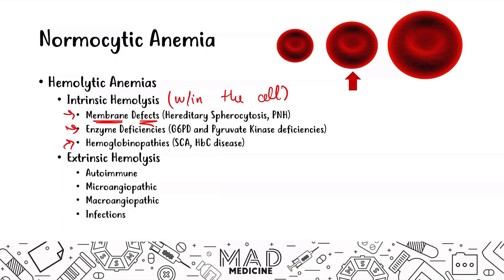Then you have extrinsic causes of hemolysis — hemolysis that occurs outside of the cell. These can be things like autoimmune hemolytic anemia, microangiopathic and macroangiopathic issues, and infections can also cause it.